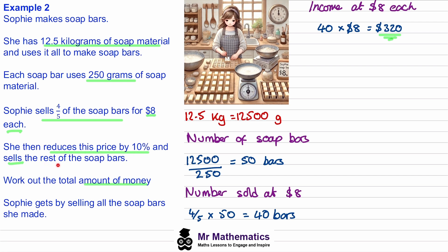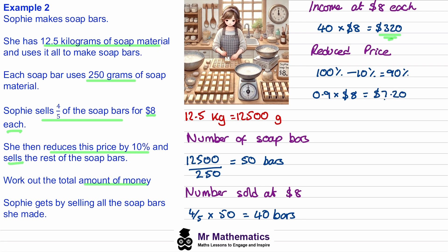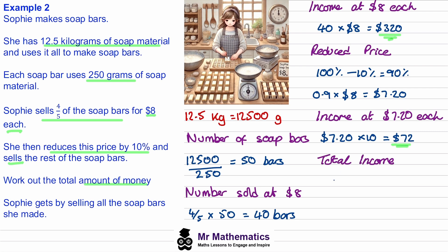She reduces the price by 10 percent and sells the rest of the soap bars. The original price is 100 percent and we're taking 10 percent off, so this will be 90 percent — that's 0.9 multiplied by eight dollars, giving a reduced price of 7 dollars 20. The income at 7.20 each will be 7.20 multiplied by the 10 bars remaining, giving us 72 dollars. So the total income is 320 plus 72, which gives us 392 dollars.